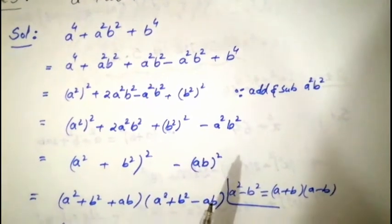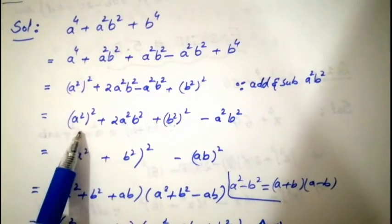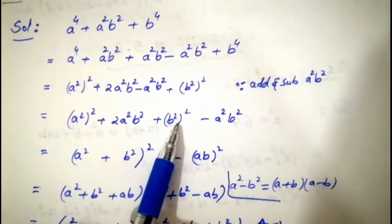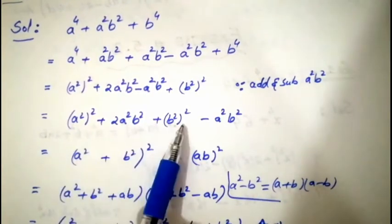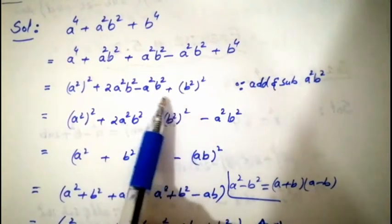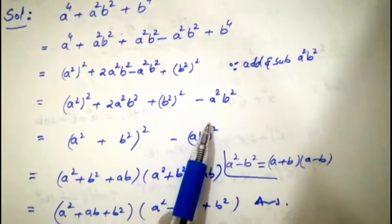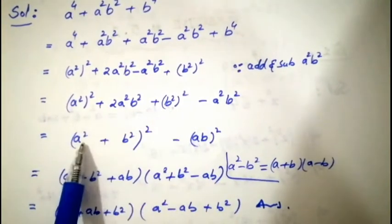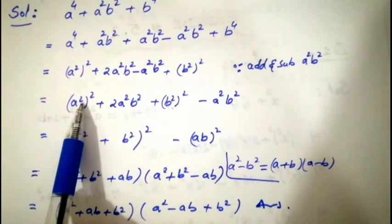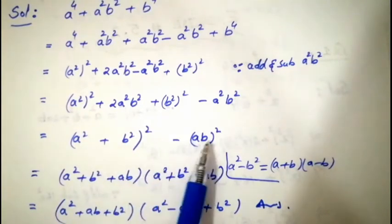Now: (a²)² + 2·a²·b² + (b²)² forms the formula a² + 2ab + b², which gives (a² + b²)². The minus term is −a²b². Since both a and b are squared, we write it as −(ab)². So we have (a² + b²)² − (ab)².